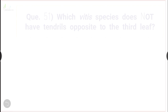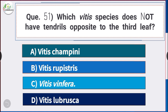Question number 51: Which Vitis species does not have tendrils opposite to the third leaf? Answer is option C — Vitis vinifera. The Vitis species that does not have tendrils opposite to the third leaf is Vitis vinifera.